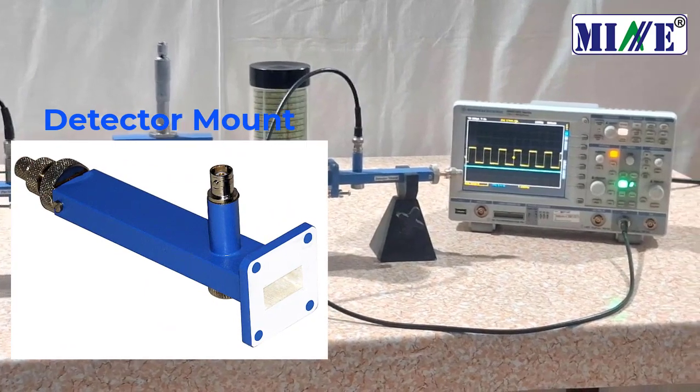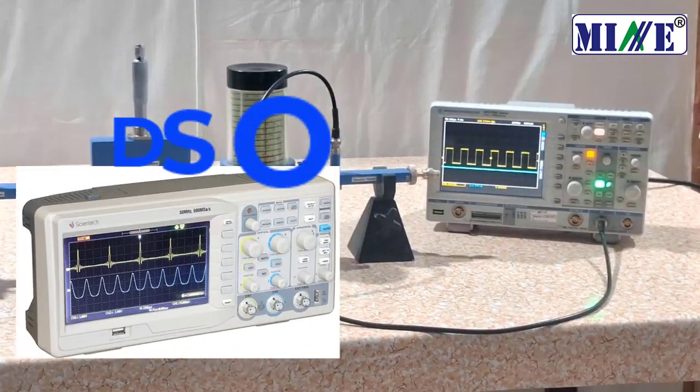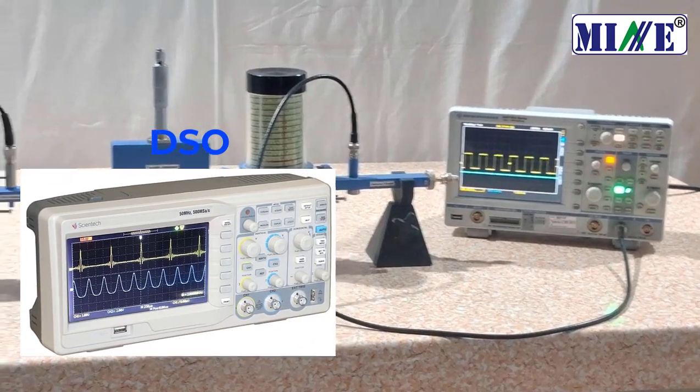Eighth is the detector mount. Ninth is the DSO as an output.